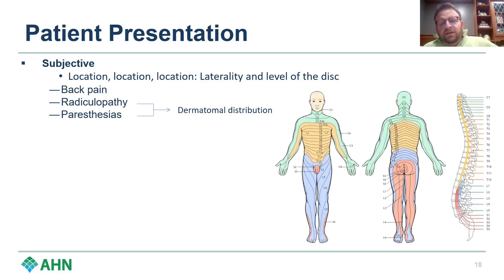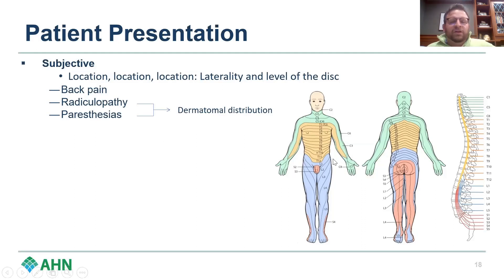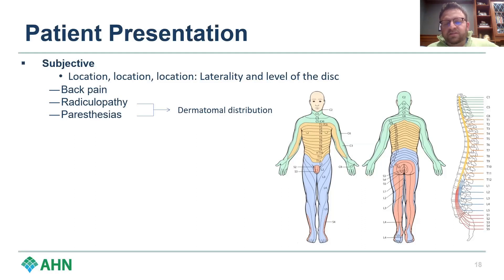Do they have a dermatomal distribution? The thing I stress with residents and medical students is that dermatomes aren't perfect — they're not set in stone. If you see somebody with an L4-5 disc herniation and their radiculopathy is more consistent with L4 or S1, that probably still explains the problem. Where dermatomes are really helpful is when someone tells you they have groin pain — L1-L2 location — and the MRI shows an L5-S1 disc herniation. That's probably not related to what they're experiencing.